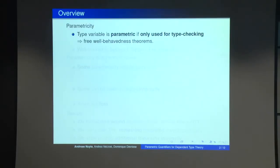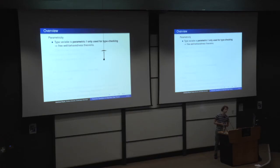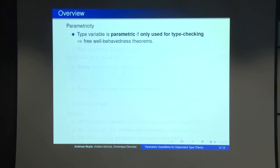Okay, so for starters, to have everyone on board, parametricity very bluntly put: if we have a type variable, we can say it's parametric if it's only used for type checking, so it doesn't really influence the computation. And of course, that's a fairly strong thing to know, so if you know that, you get all kinds of well-behavedness theorems for free. And this phenomenon of parametricity is well studied in system F, F-omega, Haskell, etc.